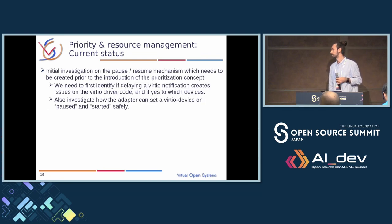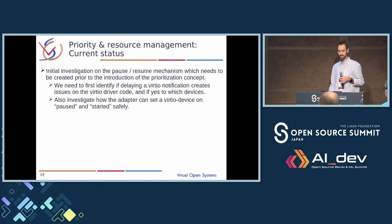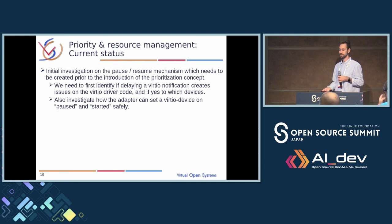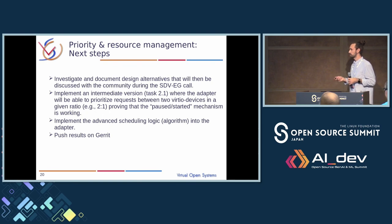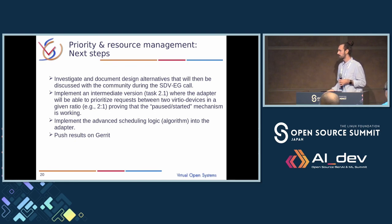The current status of the priority task: we have started investigation of the pause and resume mechanism and plan to create an initial introduction of this idea to present to the community. We need first to identify whether delaying control messages creates problems for all devices or only VirtIO sound. The next steps are: share an investigation document with the community; implement an intermediate version with a constant ratio between two devices including pause and resume; then work on the advanced scheduling logic algorithm as part of the adapter; and finally push everything to Gerrit.